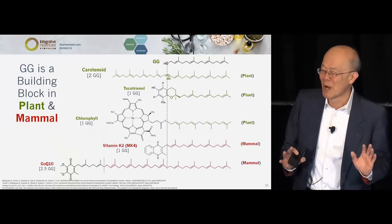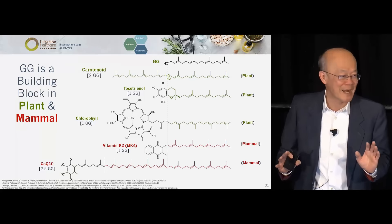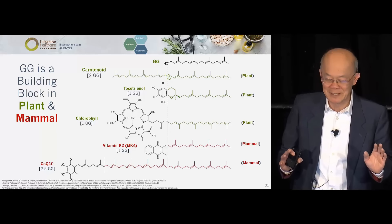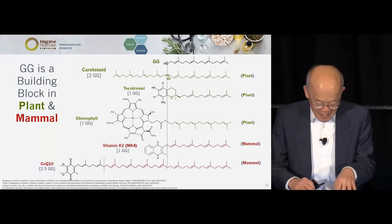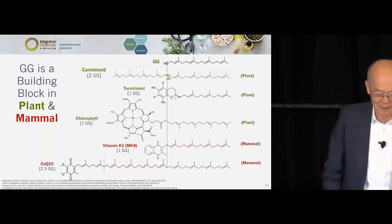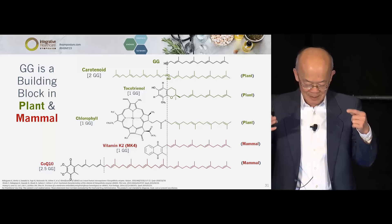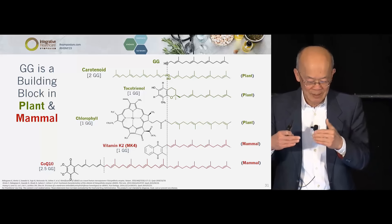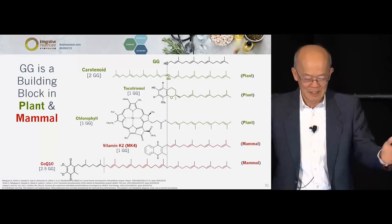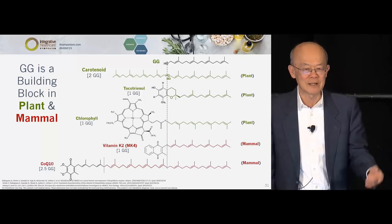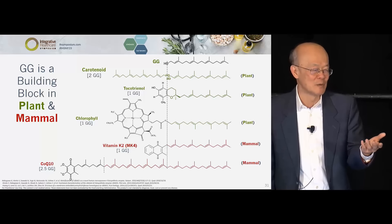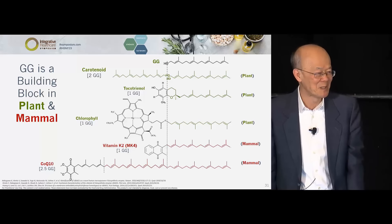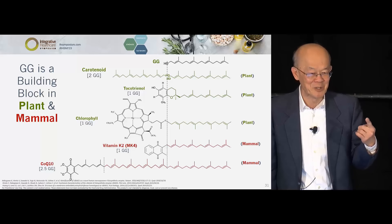This molecule is found in plants as it is in mammals. On a plant, the green color — look — GG at the top. If the two OH groups stick together, that is carotenoid. So the next time you eat your vegetables and fruit, you see the color, think GG.